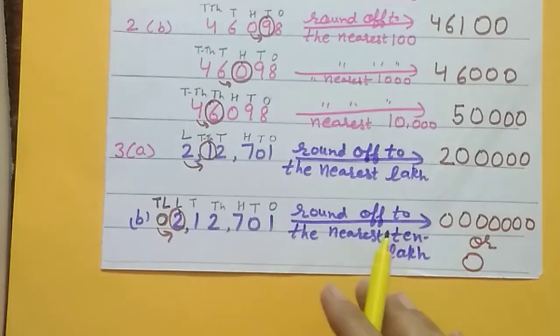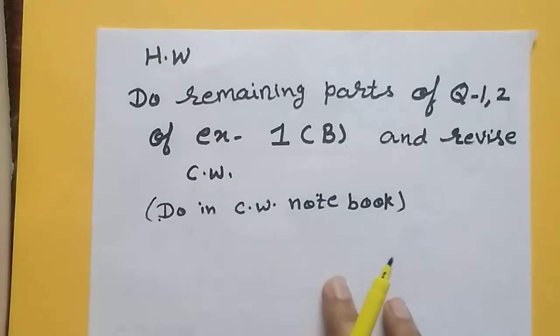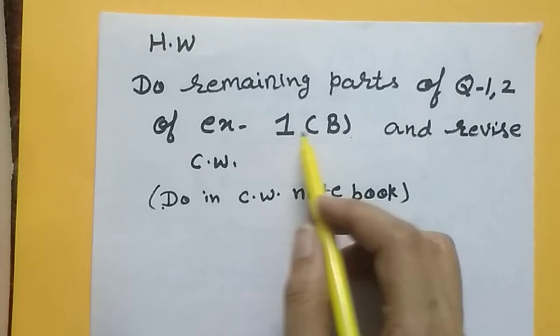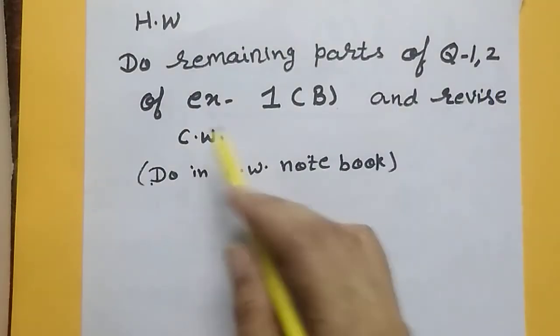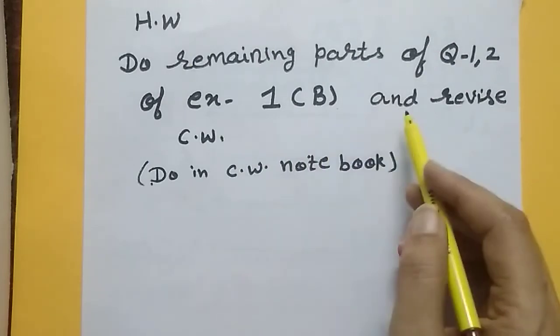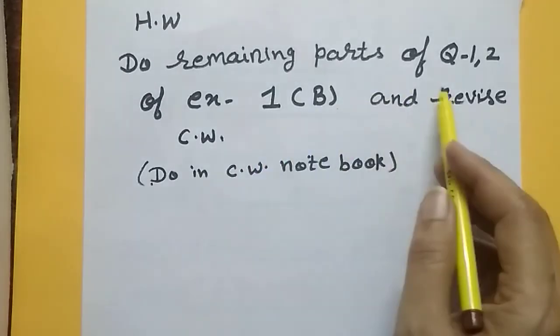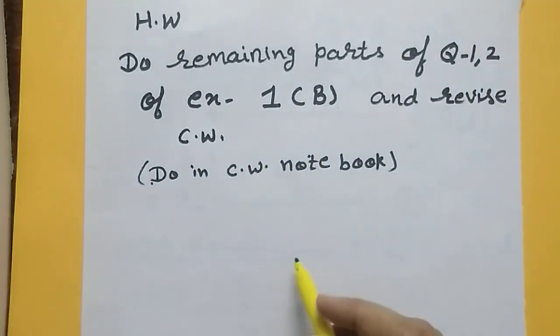I think the topic is clear to you now. It's time for homework. Your homework is the two remaining parts of questions one and two. We have done parts a, b, c, d. You will do the remaining parts of question two of exercise 1b and revise the rules of estimation. Then you will do practice questions — question one and two remaining parts in your classwork. That's all for today.